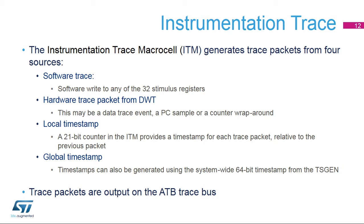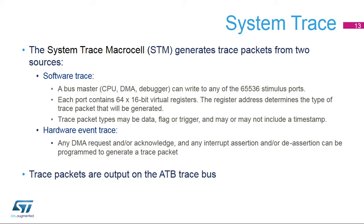The timestamp generator (TSGEN) provides a 64-bit common time base for all trace packet timestamps. This allows the trace analyzer to align traces coming from different sources according to the time at which the trace was generated. Local timestamps are not synchronized and can run at different frequencies, making it impossible to know the precise timing at which a trace was generated. Note: the Cortex-M4 only uses the 48 LSBs of the global timestamp. The system trace macrocell (STM) can be used for instrumentation of software. It is aimed primarily at the Cortex-A7, since the Cortex-M4 includes a simplified software trace unit, the ITM. Nevertheless, the STM is accessible to the Cortex-M4 core, as well as the DMA and MDMA engines.